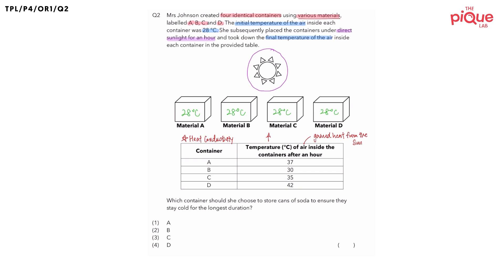I want you guys to help me identify which container is made of the best conductor of heat. When we are talking about the best conductor of heat, the air inside the container will gain heat the fastest. If we gain heat the fastest, the final temperature of the air after an hour will be the highest temperature. Which container is at the highest temperature after an hour? It will be container D. So container D has the largest increase in temperature and is made up of the best conductor of heat.